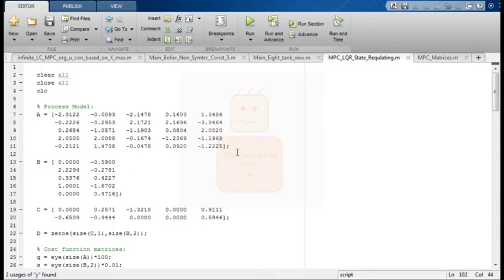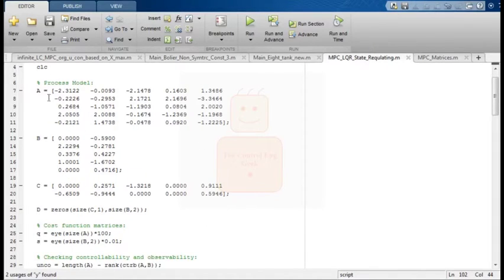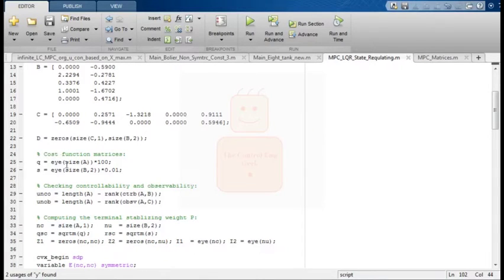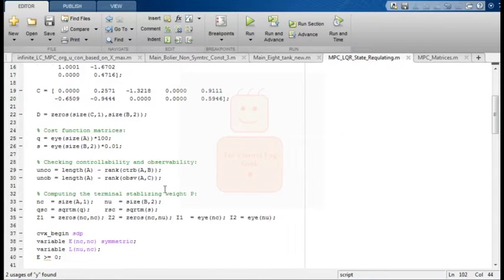The MATLAB script starts by introducing the process dynamic through a state space representation along with the cost function matrices. Next is checking the controllability and observability of the process which are essential for the design of the MPC, LQR, as well as the Kalman filter.